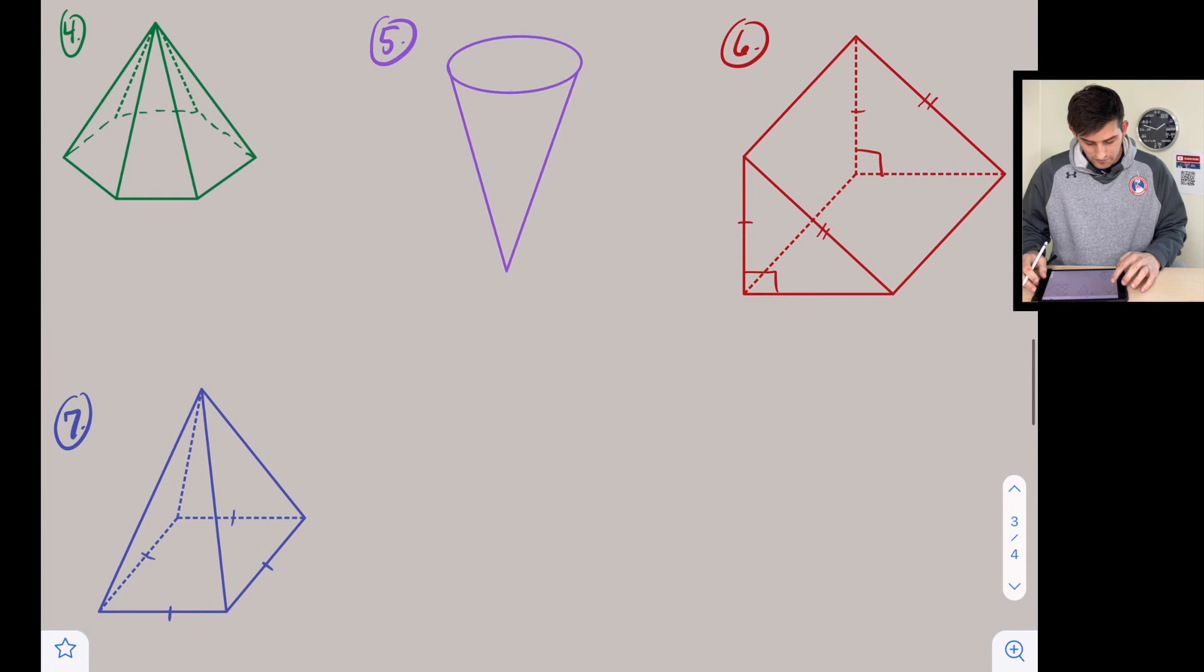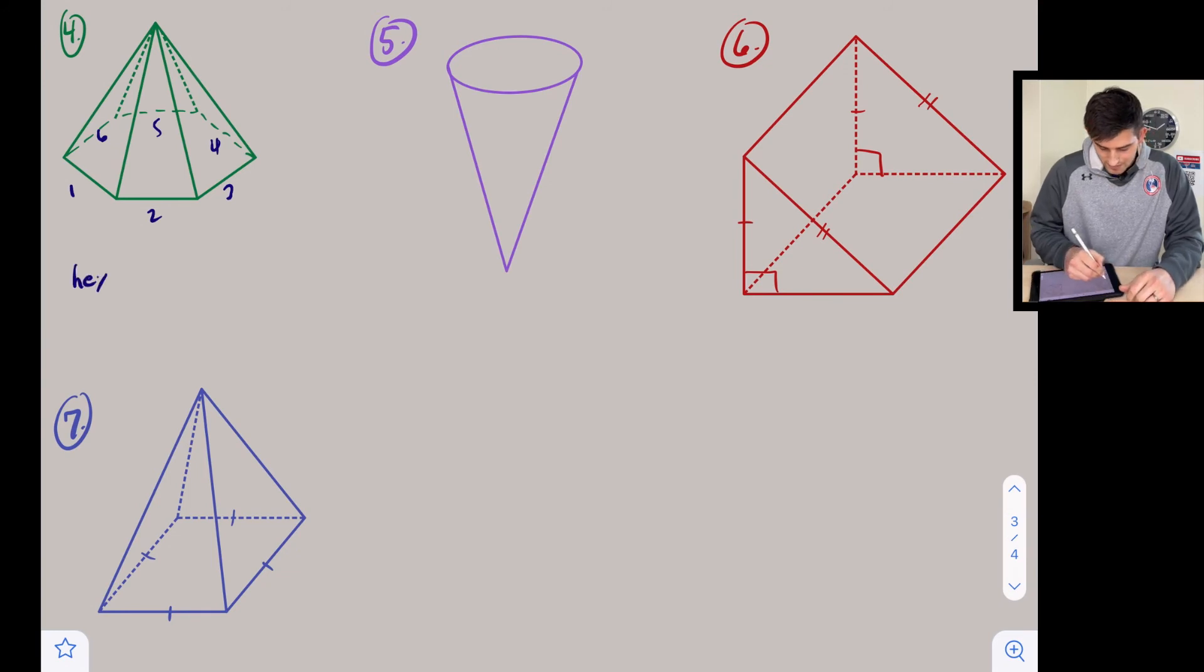Number four: we have again one, two, three, four, five, six sides, so this is hexagonal. But now all of our faces meet at a point, so instead of this being a prism, this will be a pyramid—a hexagonal pyramid.